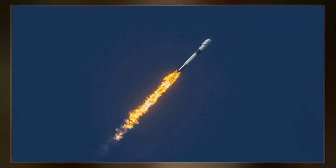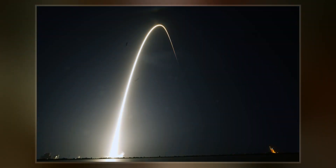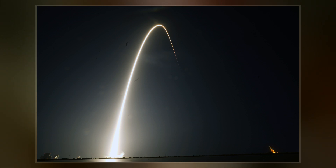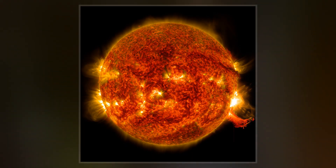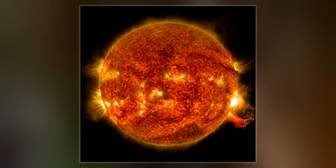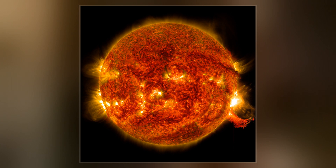During the main phase of a geomagnetic storm, electric current in the magnetosphere creates a magnetic force that pushes out the boundary between the magnetosphere and the solar wind. Several space weather phenomena tend to be associated with or are caused by a geomagnetic storm.